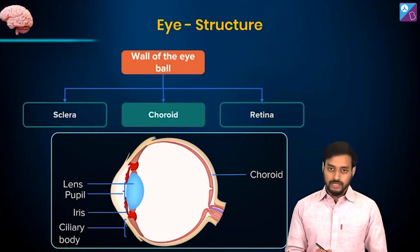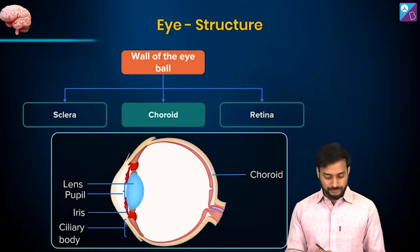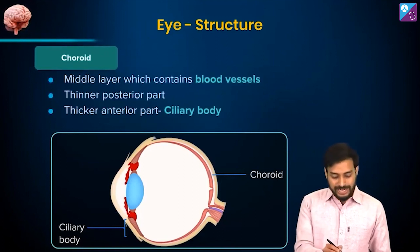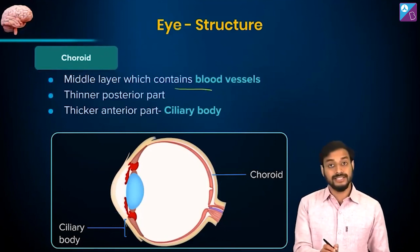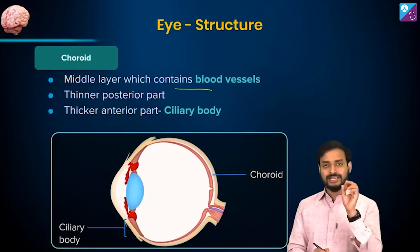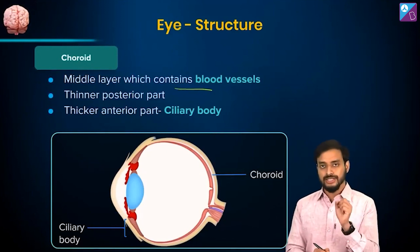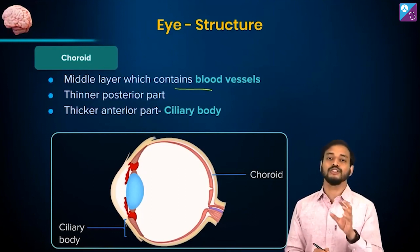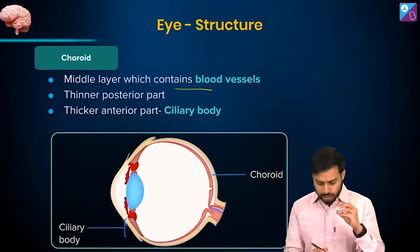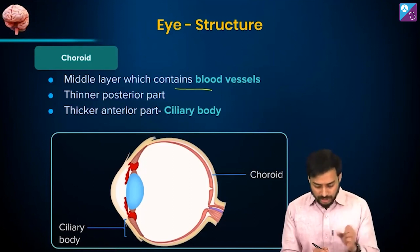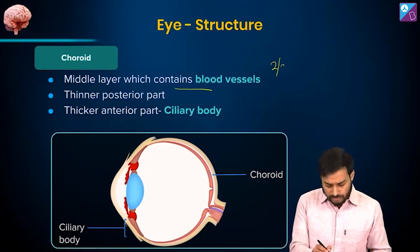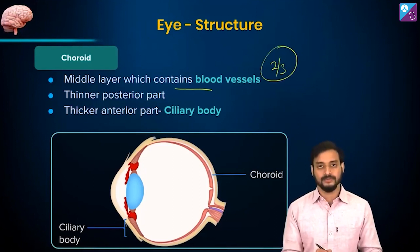Starting with the choroid — the middle layer — which contains blood vessels. This layer contains blood vessels, so it looks bluish in color. If I concentrate on the posterior part, it is thinner — about two-thirds of it is quite thin.